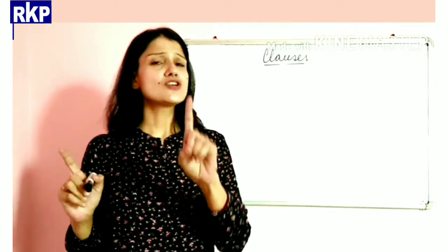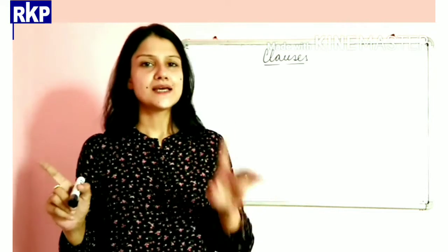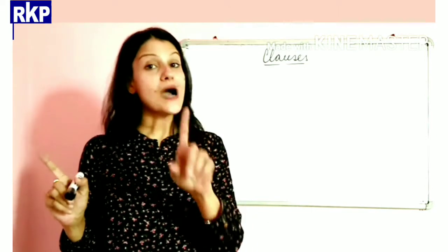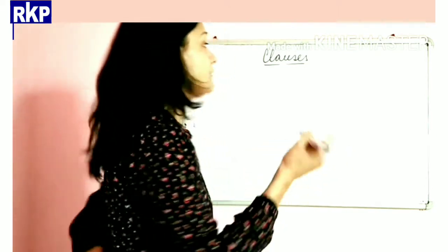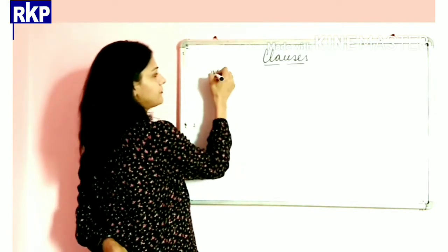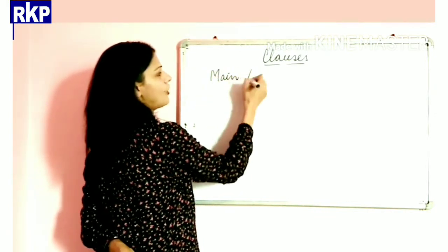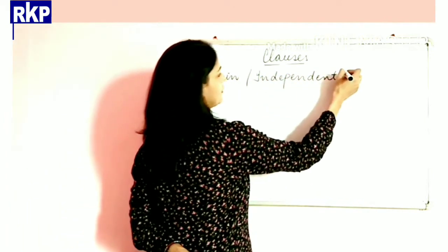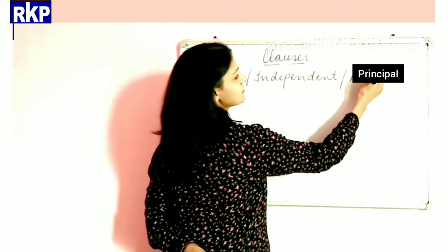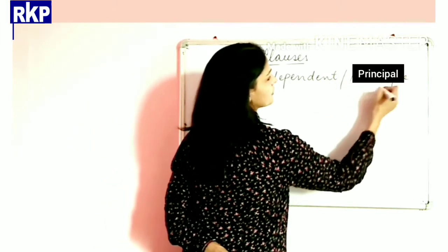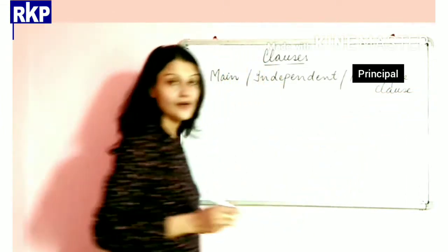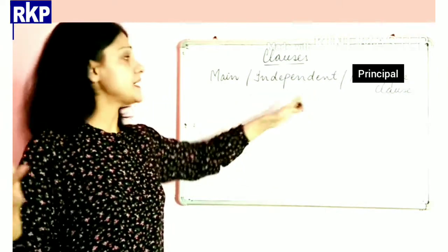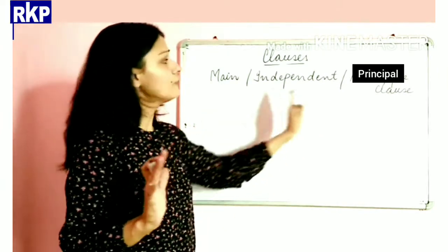One single sentence always has at least one main clause. I am talking here about the main, independent, or principal clause. You may encounter any of these names in books, so you should be aware of all of them.